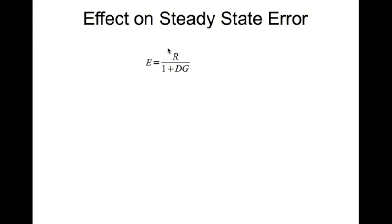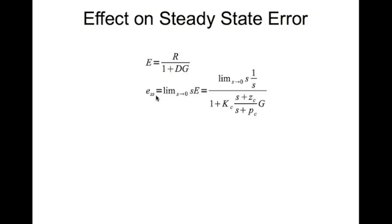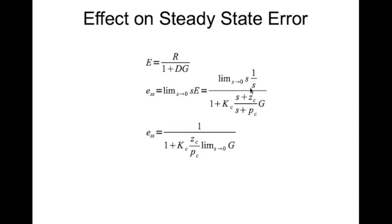Let's look at what happens to the steady-state error when you use a lead controller. The error expression is E(s) = R / (1 + DG). The steady-state error is given by the limit as s tends to 0 of s·E(s), with R replaced by the step function. With this limit, s cancels and you take the limit as s tends to 0 of G, which gives a constant.